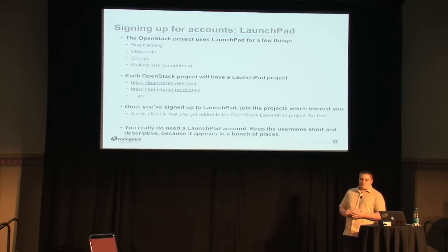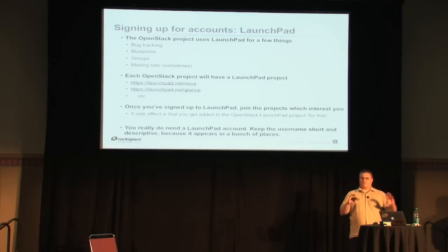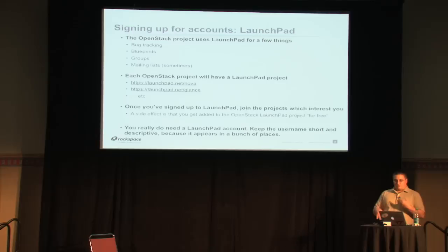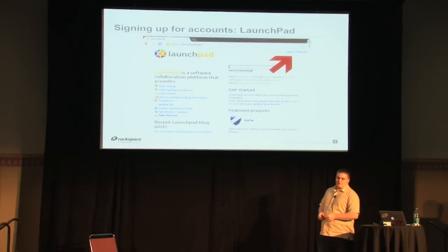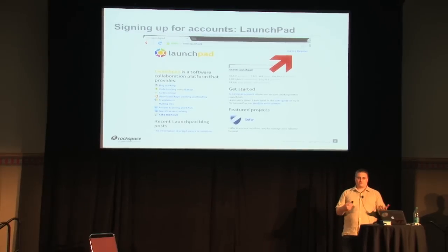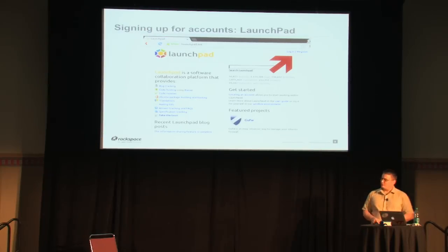Each OpenStack project has bugs and blueprints, and each project has a page on Launchpad which links to all of that stuff. So you don't need to remember a million URLs — you just need to remember the one Nova page and go from there. Once you've signed up for your Launchpad account, all the other systems will start to work magically for free. Luckily, they're not very hard to create — if you go to launchpad.net, in the top right there's a sign-in/register link. I'm going to assume you know how to fill out an account sign-up web form.